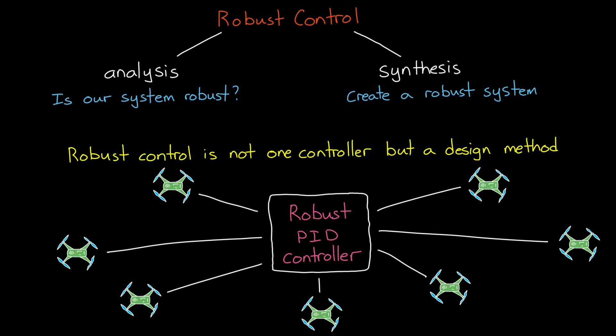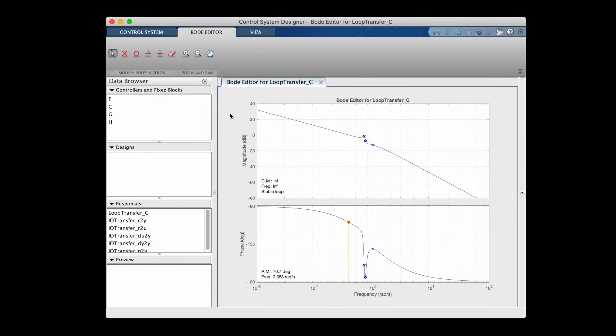In the classical sense, loop shaping is a robust control method. We can set a specified gain or phase margin and then shape the loop by adding gains and poles and zeros until the design meets those requirements.